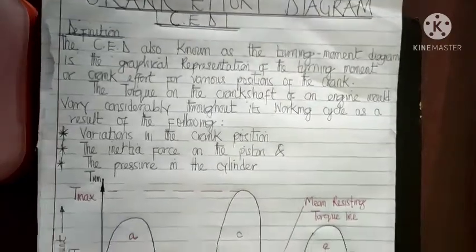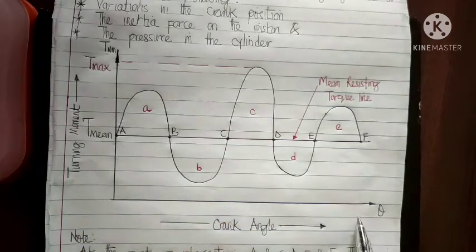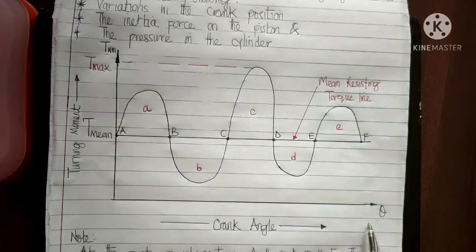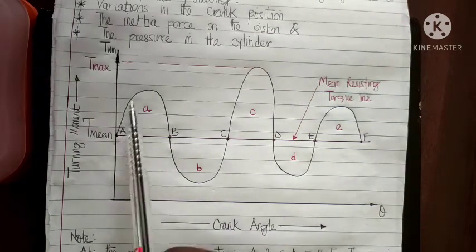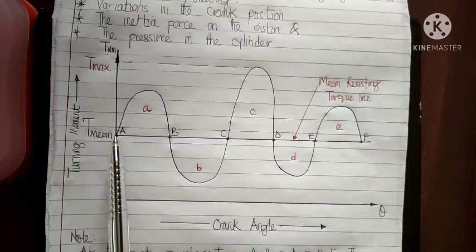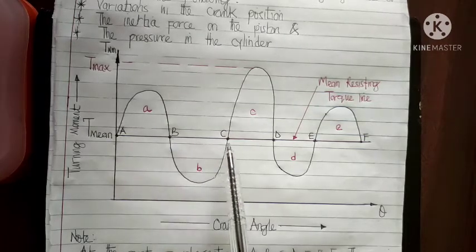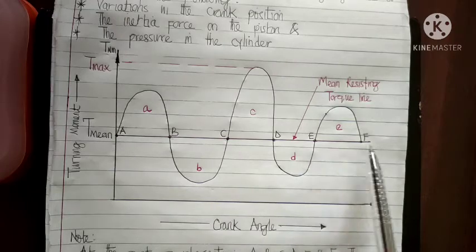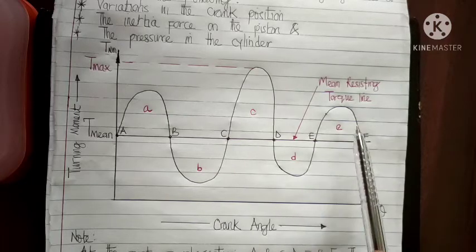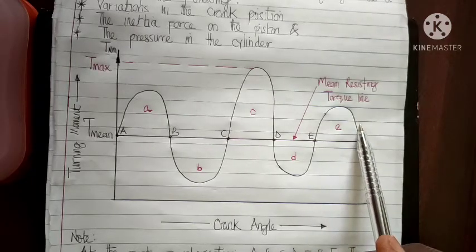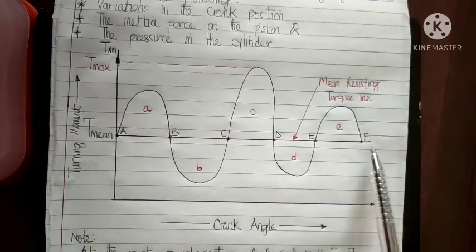The graph of torque against crank angle is plotted, and we get a sinusoidal waveform when the turning moment is plotted against the crank angle of the crankshaft. We have energy points at points A, B, C, D, E, and F. The straight line is known as the T-mean line, also known as the mean resistive torque line.